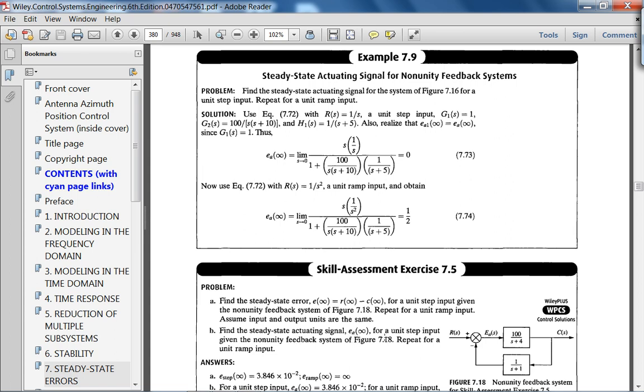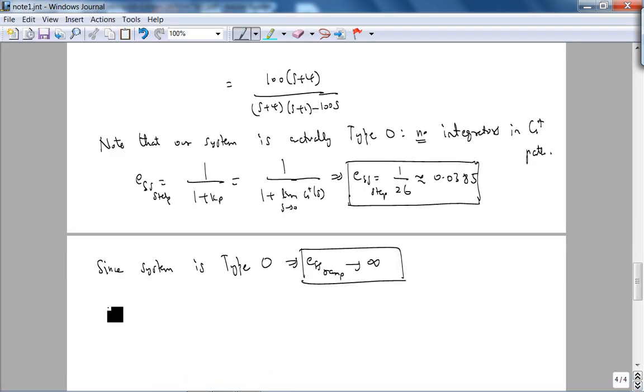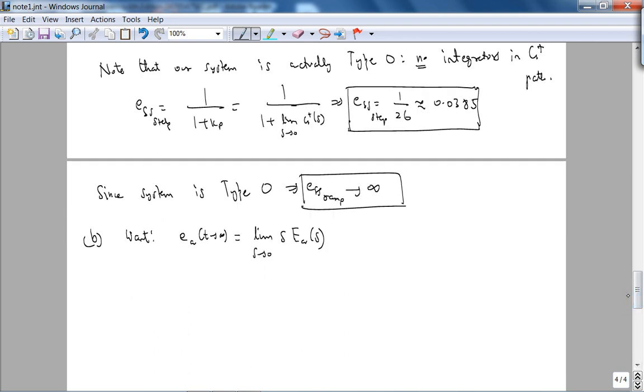And for part B, he's simply asking the error in the actuating signal, E infinity. So he's basically asking what is E sub A, or what is the limit as s goes to 0 of s times E_A(s). So let's look at that for both unit step and unit ramp. In the sense we know that we want EA as t goes to infinity. This implies, and we don't have to check stability because we already did, limit as s goes to 0 of s times EA(s). We'll play the same trick as we did last week. That is, we'll get an expression for EA in terms of R, G, and H.